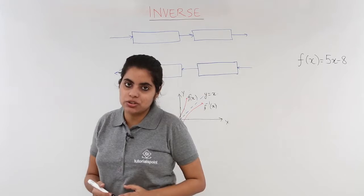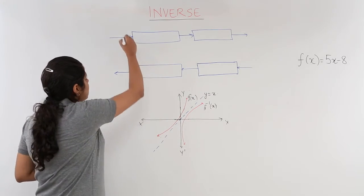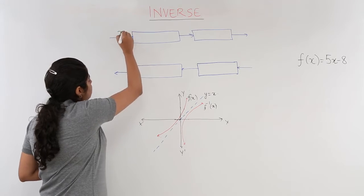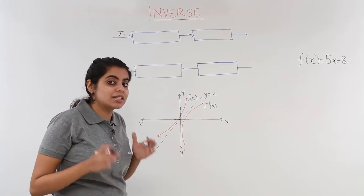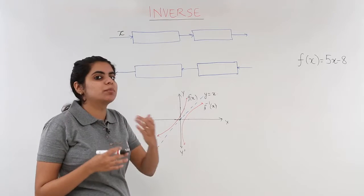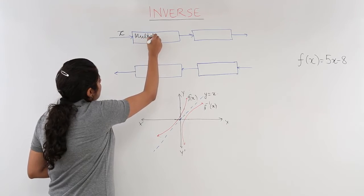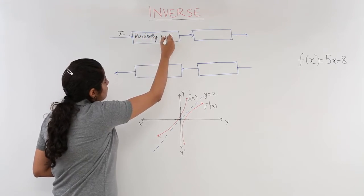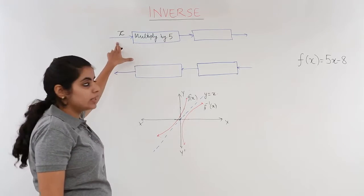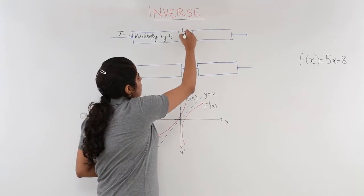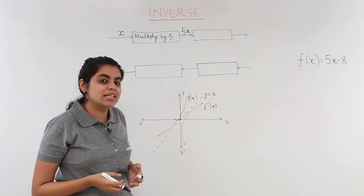Now, how to frame this function? 5x - 8, if you think here if I give an input x and now I have to obtain 5x - 8, means x has to be multiplied by 5. So I multiply by 5. Now after multiplying by 5 with x, I get 5x.